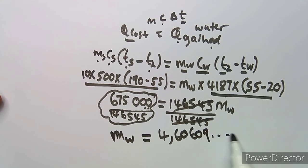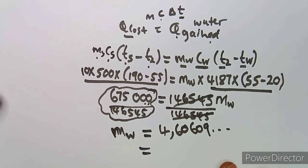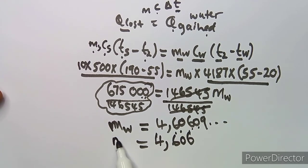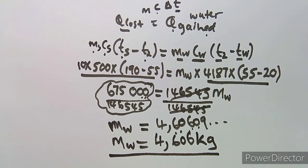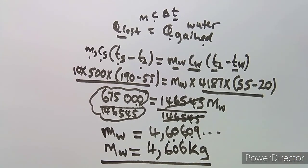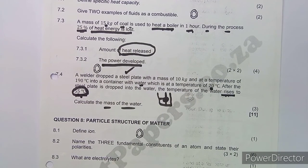Using a calculator, dividing gives approximately 4.606... kilograms. Rounding to three decimal places, the mass of water is approximately 4.606 kg. Remember, mass is measured in kilograms. The key principle here is: heat lost equals heat gained — identify what is losing the heat and what is gaining the heat.